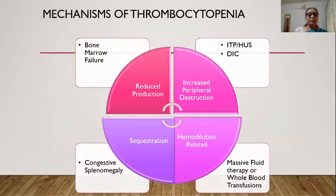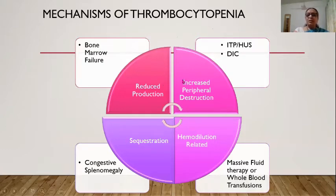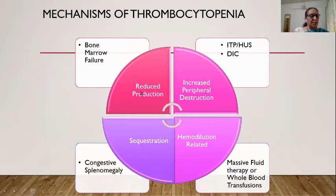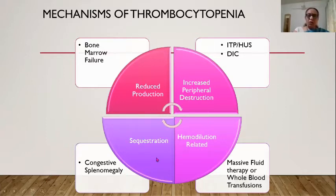The main mechanisms of thrombocytopenia in children are: increased peripheral destruction — the commonest cause being ITP, also HUS, DIC, and ICU settings; reduced production due to bone marrow failure; and bone marrow failure through infiltration by leukemia, lymphoma, tumors, myelofibrosis, aplastic anemia, or myelodysplastic syndrome.